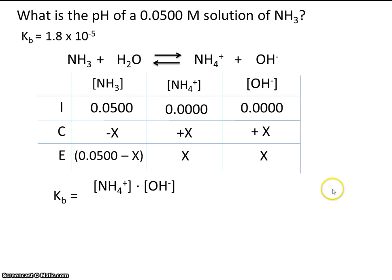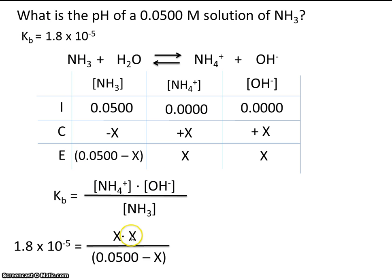Alright, let's set up the equilibrium expression. The concentration of the products divided by the concentration of the reactant. And then let's plug in what we know. They give us the Kb value. And for the products, we have x and x. And the reactant, the equilibrium concentration is here.